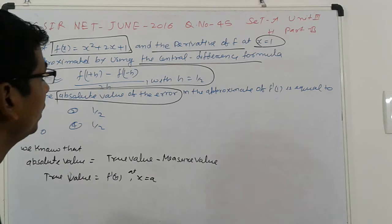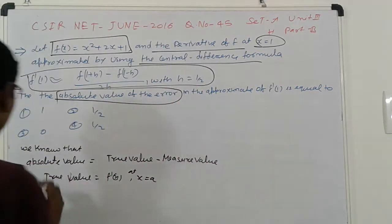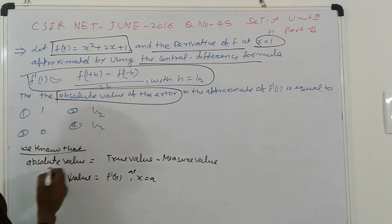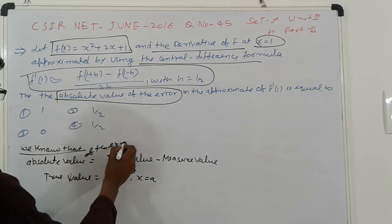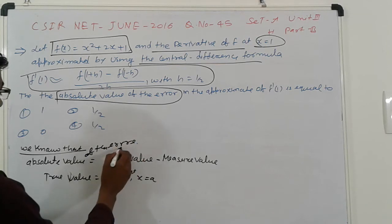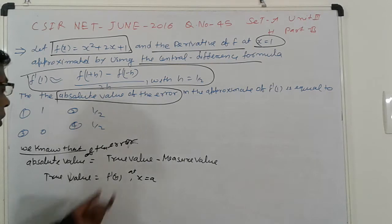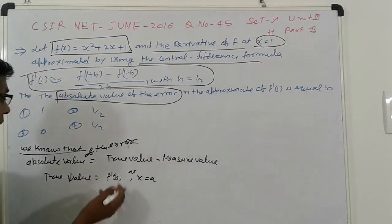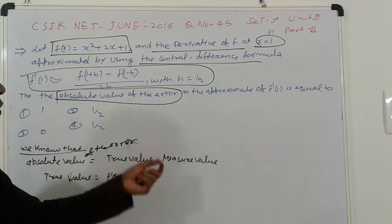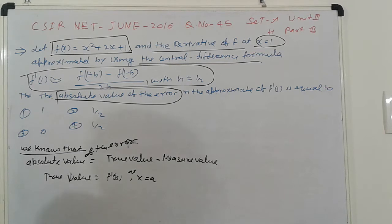Absolute value of the error in the approximate of this. So we know that absolute value of the error equals true value minus measured value. True value, what is the true value? Find out the true value, find out the f of x at point points, or find out scale legend and that is we get the true values.